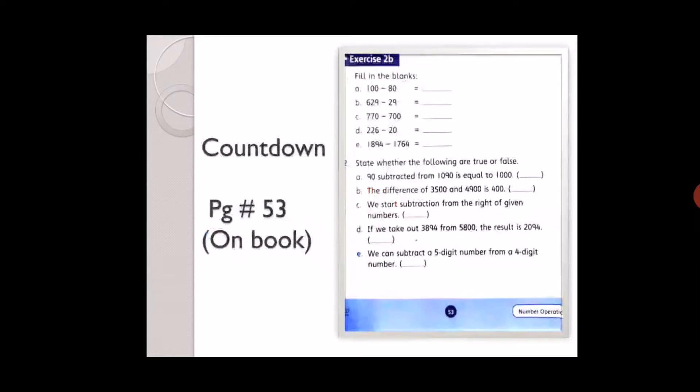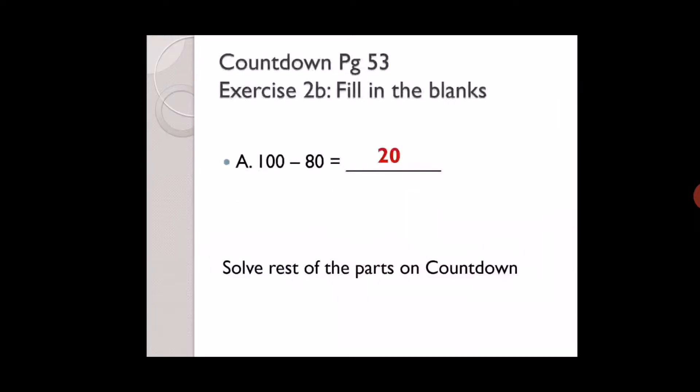Countdown page number 53. Write day and date at the top of the page. Exercise 2B. Fill in the blanks. A: one hundred minus eighty. One hundred minus eighty is twenty. Solve rest of the parts on your countdown.